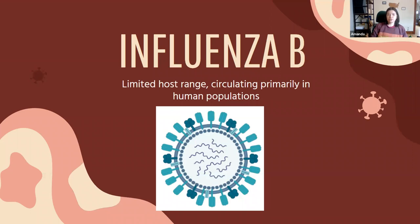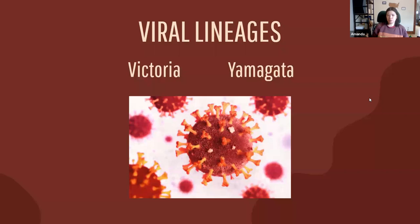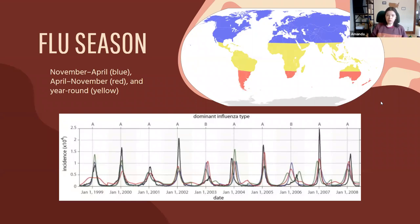Influenza B is known to have a more limited host range, but it circulates primarily in human populations. It's named primarily by its viral lineages — the Victoria and Yamagata lineages, named for where they were originally isolated. It's much less common than influenza A.